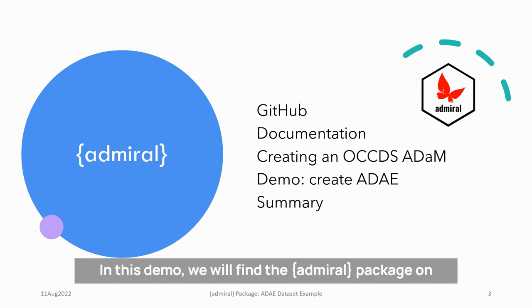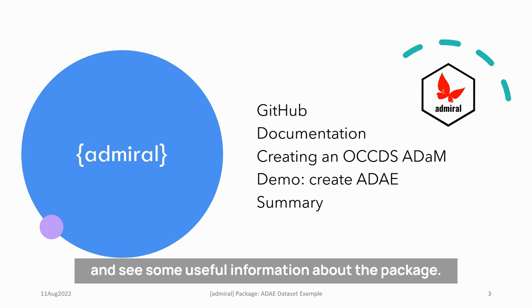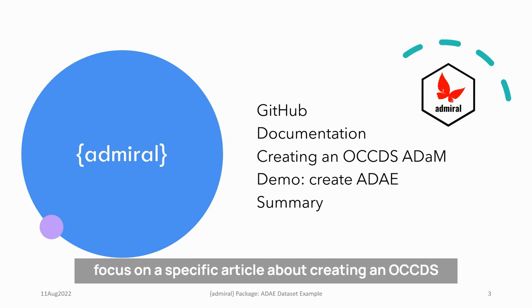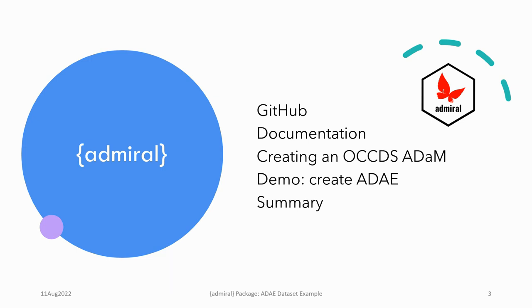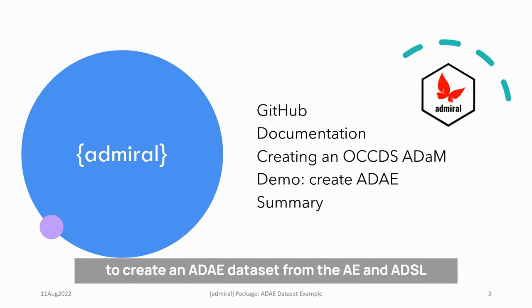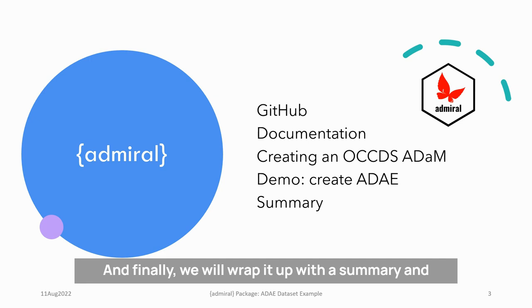In this demo, we will find the Admiral package on GitHub and see some useful information about the package. We will take a look at the available documentation and focus on a specific article about creating an OCCDS Atom dataset. We will follow the example provided in that article to create an ADAE dataset from the AE and ADSL datasets. And finally, we will wrap it up with a summary and provide some useful links.